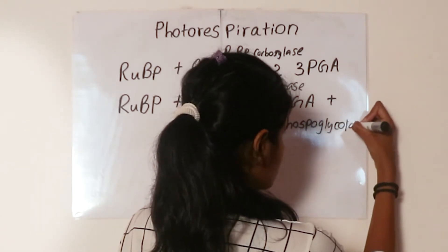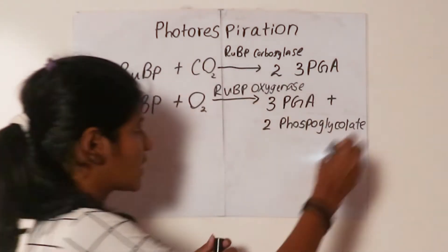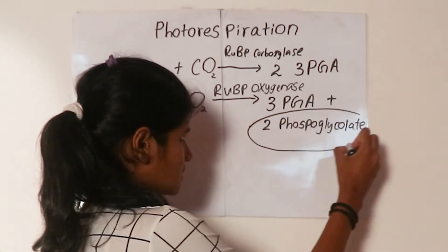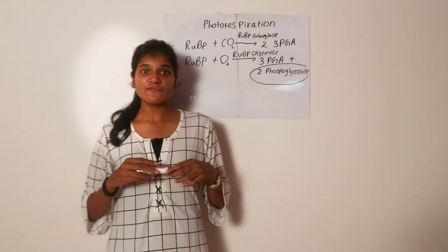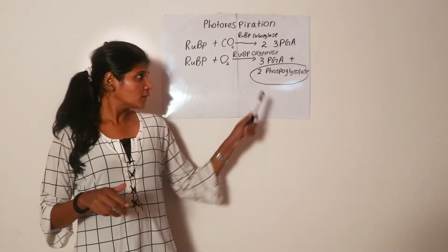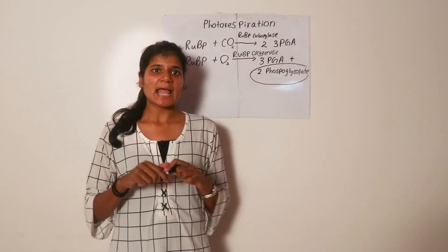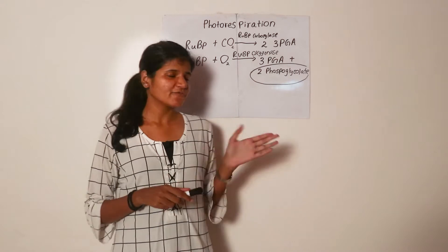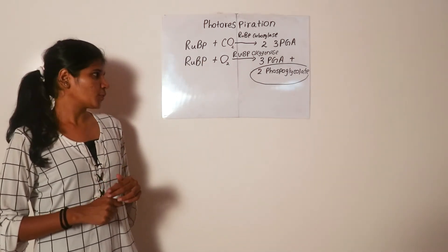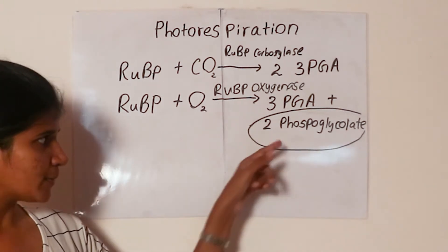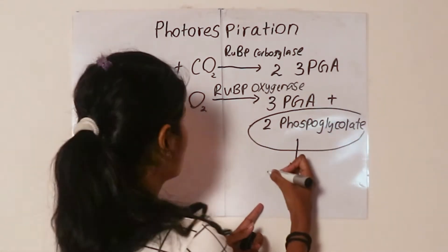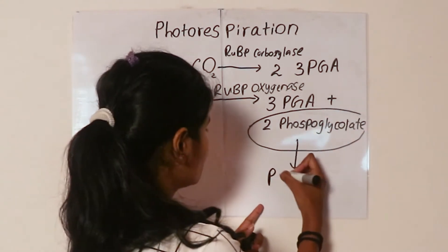This substance called 2-phosphoglycolate is toxic to the plant in higher concentrations. Therefore, it needs to be metabolized in a different pathway — it needs to be removed from the plant. This pathway of removing 2-phosphoglycolate we call photorespiration.